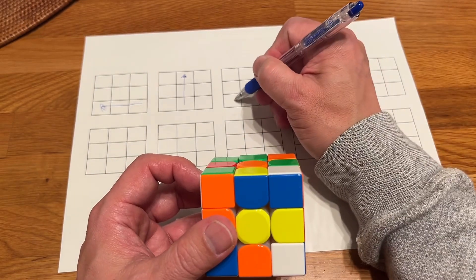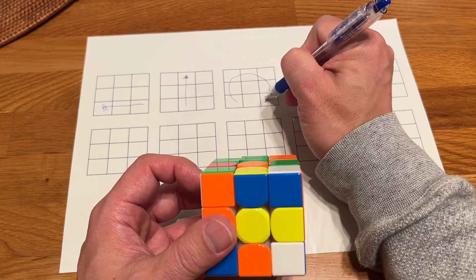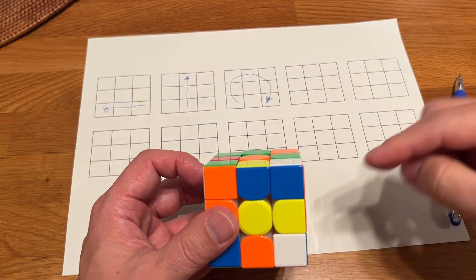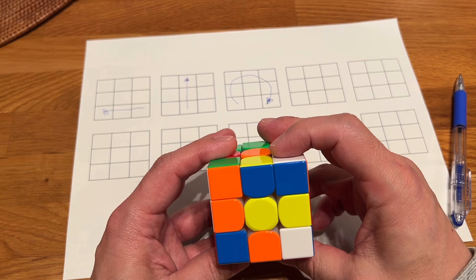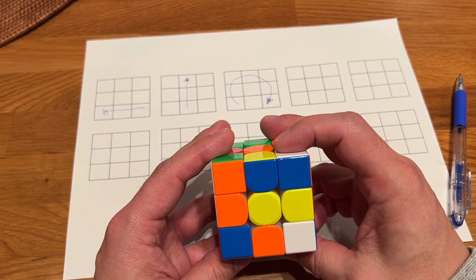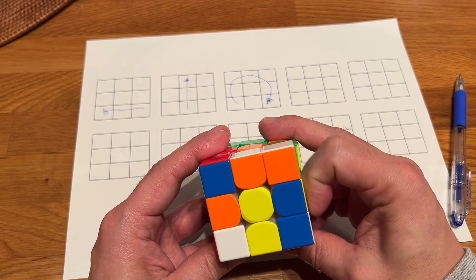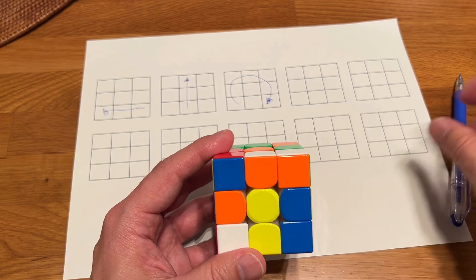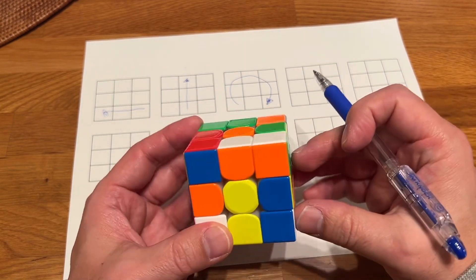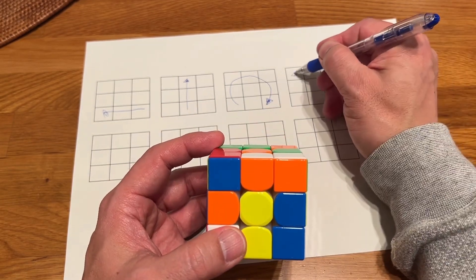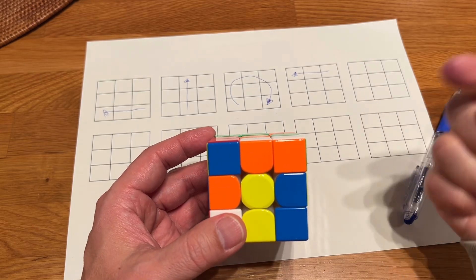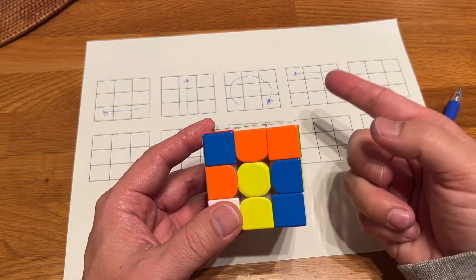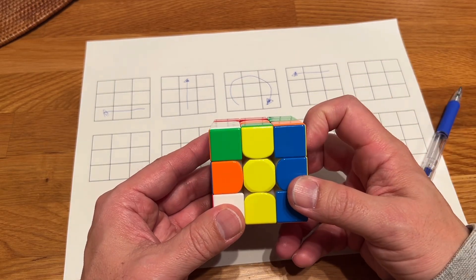And the third step would be rotate your front face from left to right, 90 degrees. And the top layer, just rotate from right to left. Okay.